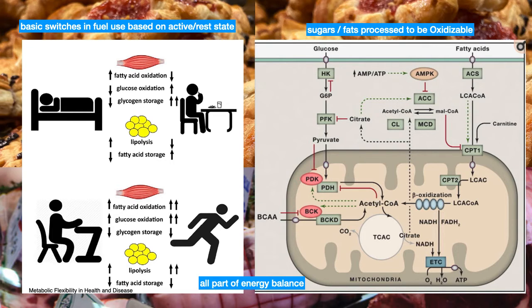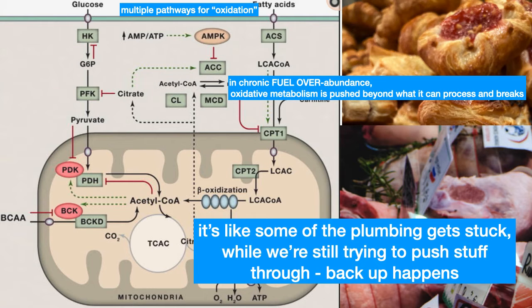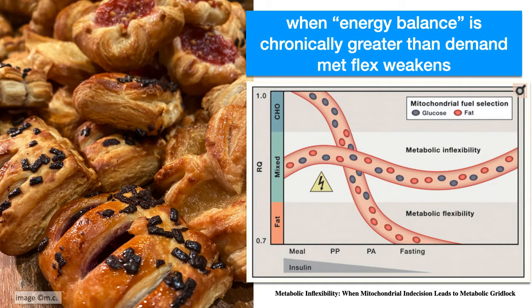Metabolic flexibility is compromised when we don't shift states. One of the biggest issues is when we're in a chronically fed state — we never give ourselves a chance to not have food coming into our system. That chronic fed-ness can, especially at a certain amount, really disrupt this process. The glycolytic pathways and the beta-oxidative pathways for oxidizing fuels get overwhelmed, literally. There's a cool article that refers to this as metabolic gridlock.